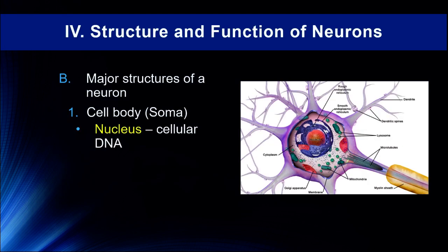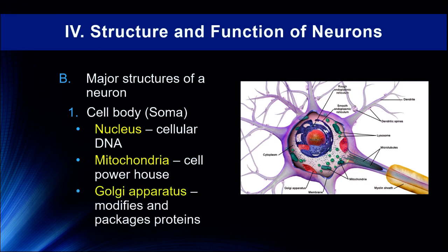The nucleus contains the cellular DNA, which is important for encoding proteins. We'll talk about epigenetics — how experiences like stress and post-traumatic stress disorder can alter genetic signaling so that different proteins are made or the cell responds differently, and those epigenetic changes can be inherited by offspring. Mitochondria is the cell powerhouse. The Golgi apparatus modifies and packages proteins, particularly neurotransmitters, which are sent down the length of the axon to the terminal buttons where they are released.